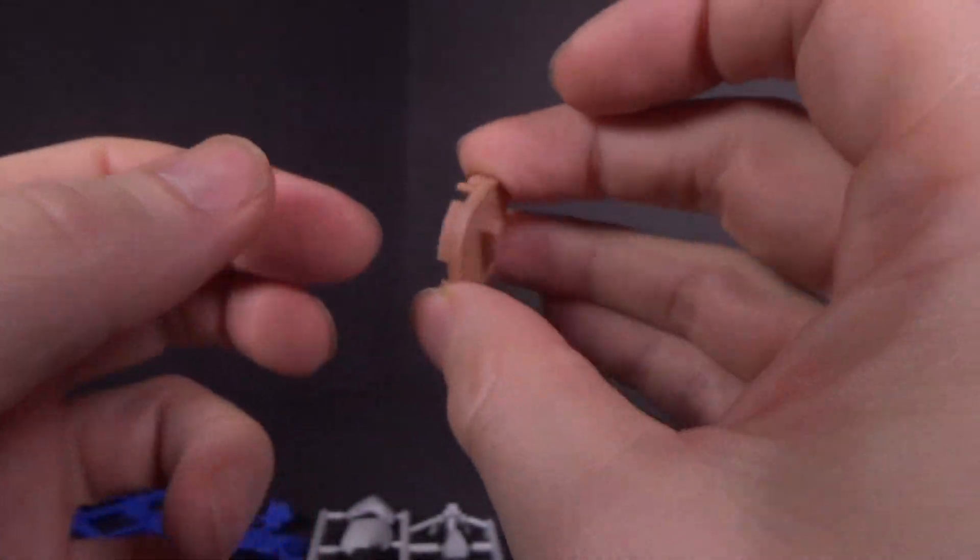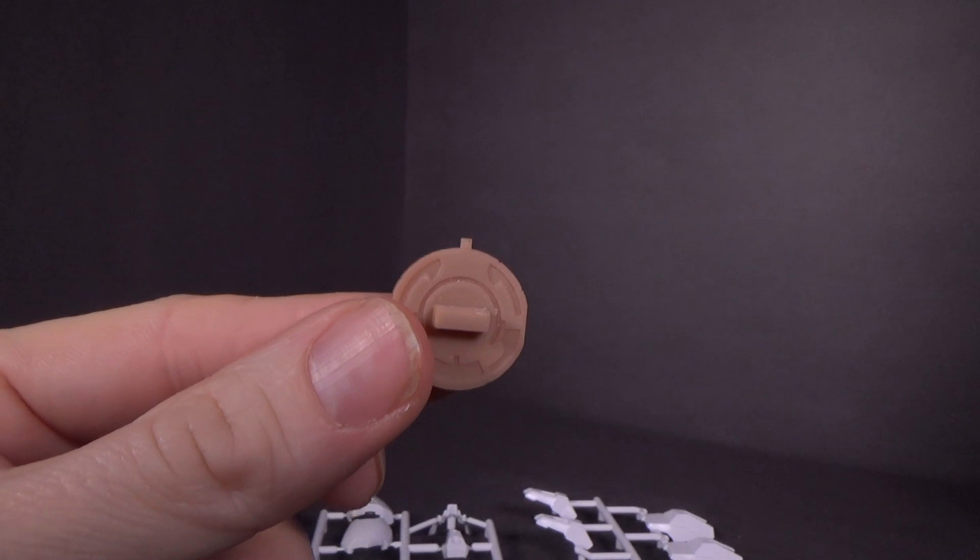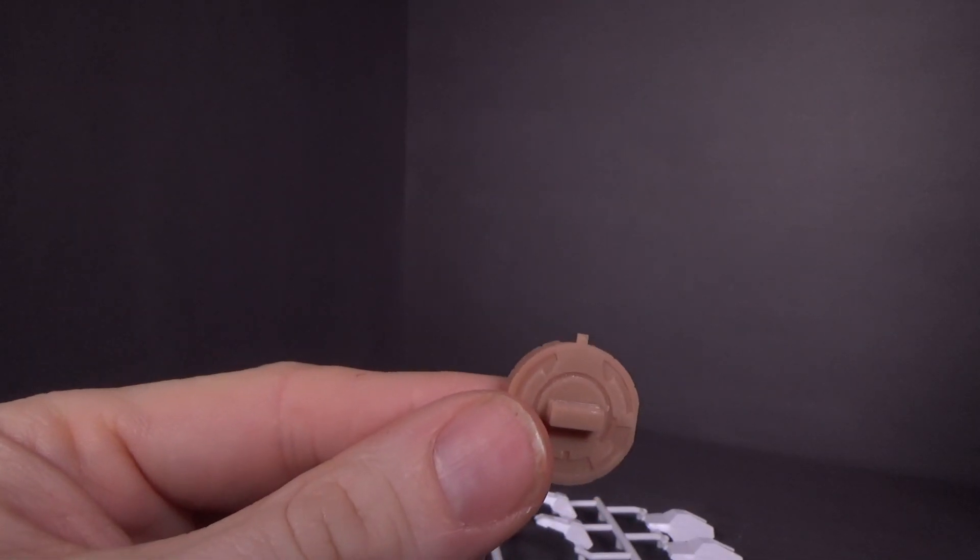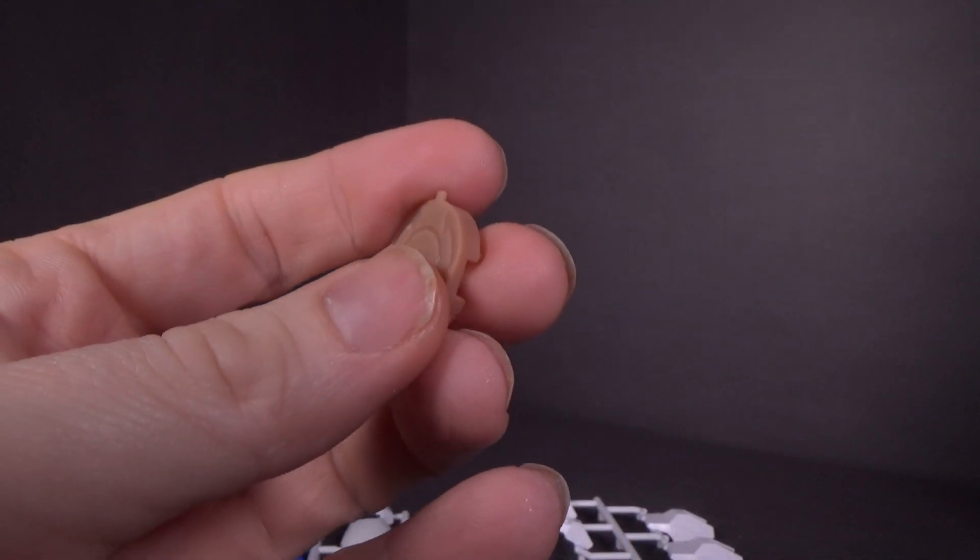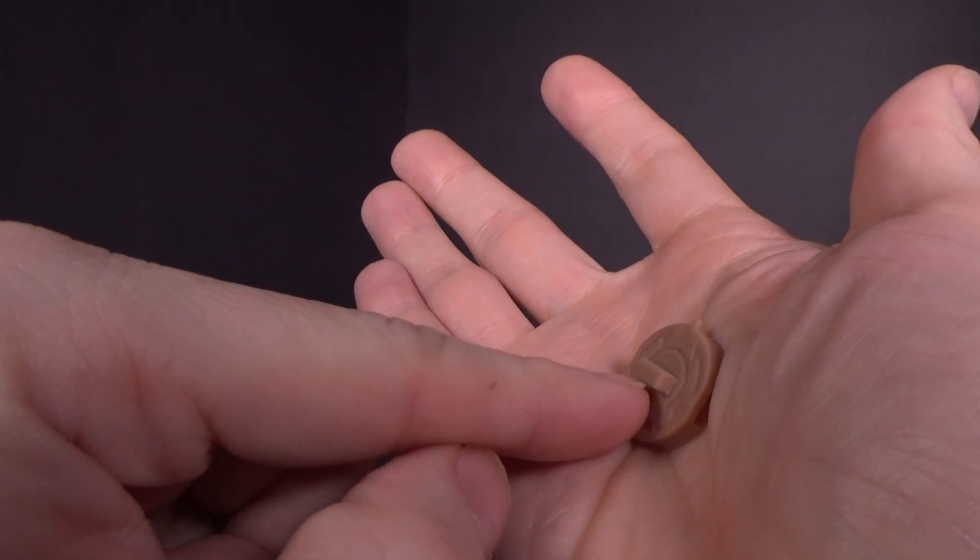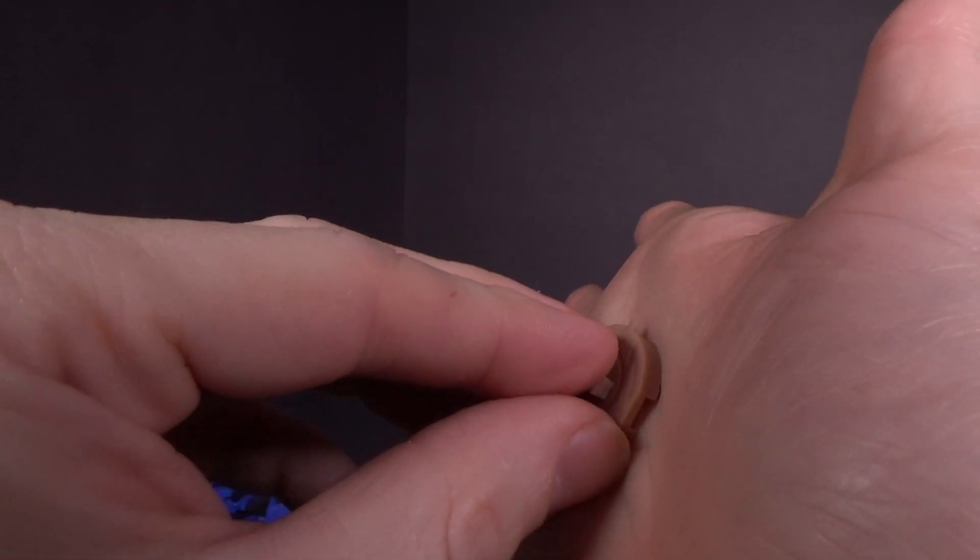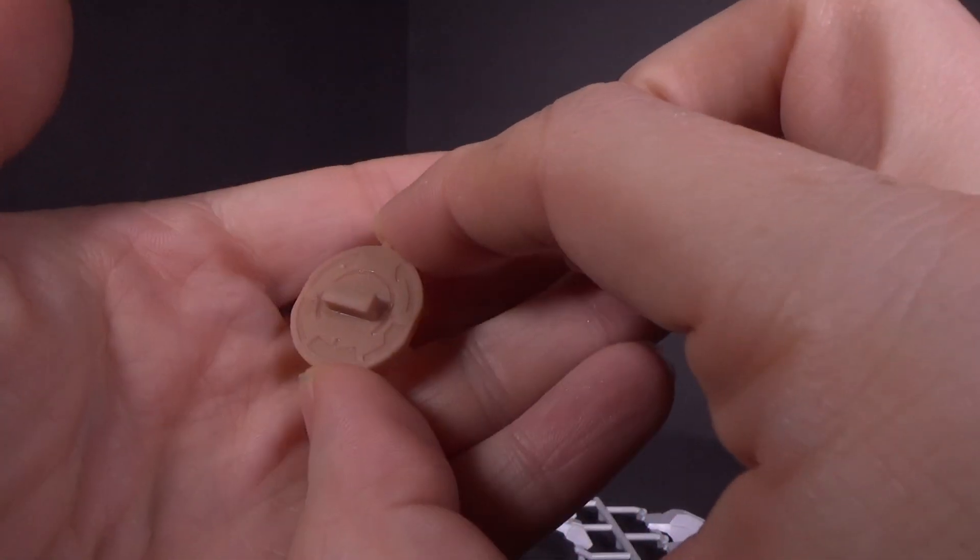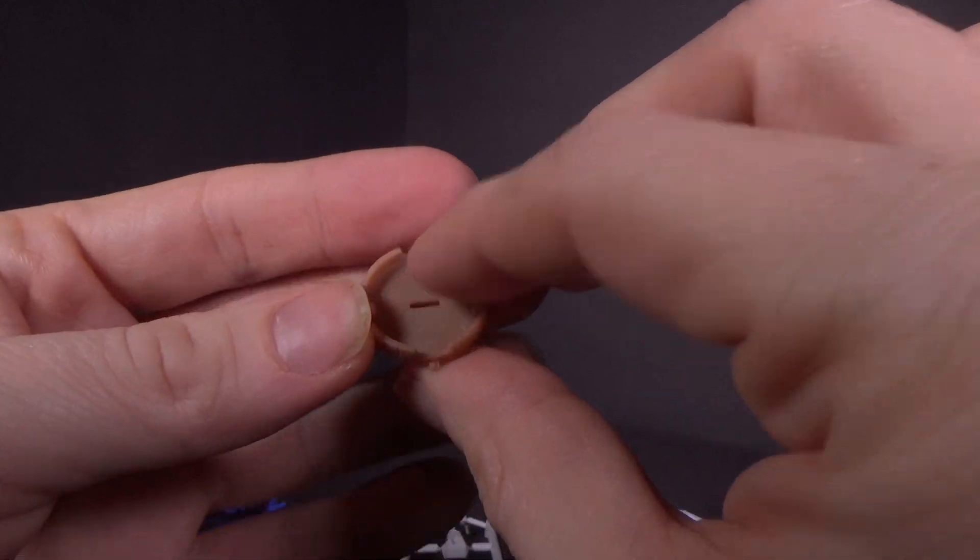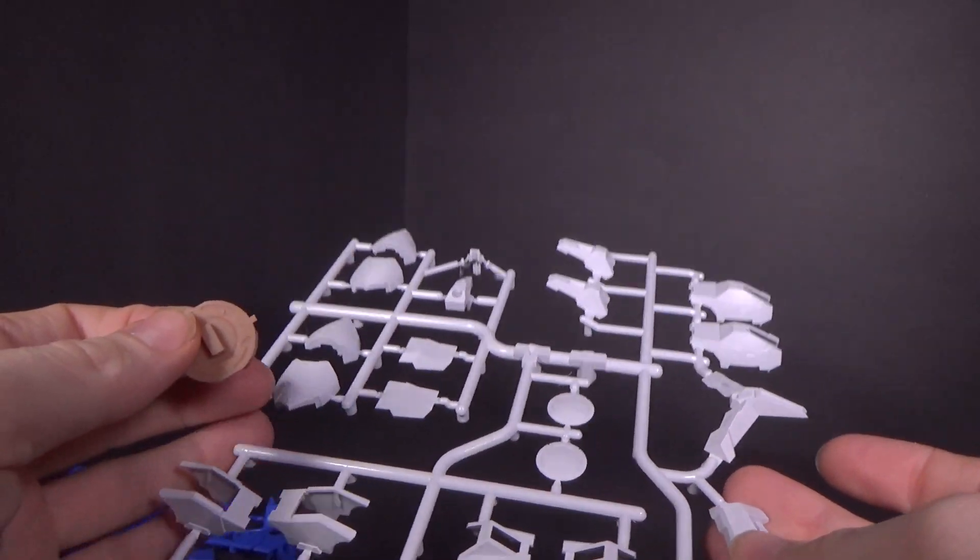So we got that. And then, this is the weirdest thing. This. This is obviously the panel that covers the GN drive and the torso that plugs in. Like this would go into the torso and this would plug the GN drive or the actual backpack into the torso. But it's a different color. It's a different material. This is more like resin than this. This is plastic. This is like resin.